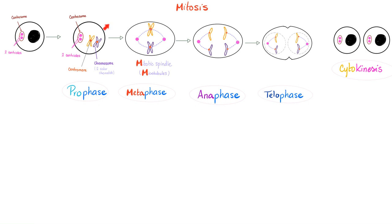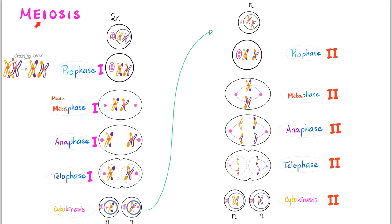Notice there is no crossover in mitosis. Each chromosome has two mitotic spindles on both sides. In anaphase the chromosomes separate, and telo phase is the end. Next you have cytokinesis.